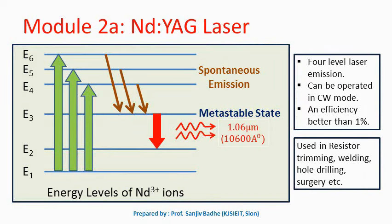Let us understand the working of the Nd:YAG laser using the energy level diagram of neodymium ions. It is a four level laser system, so population inversion is achieved between E3 and E2. The ground level is not involved here, and lasing action will occur between energy levels E3 and E2. As a first step, the light energy from the krypton lamp excites the neodymium ions to higher energy levels — this is the fourth level, comprising E4, E5, and E6. In a four level laser system, this group of energy levels serves the purpose of the fourth level. All these energy levels are normal states, none of them is a metastable state.